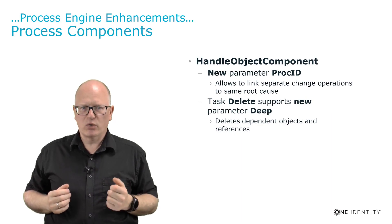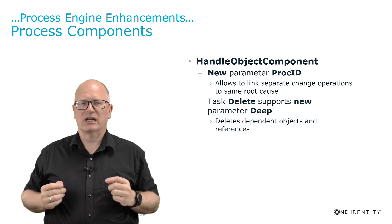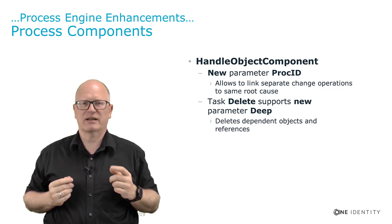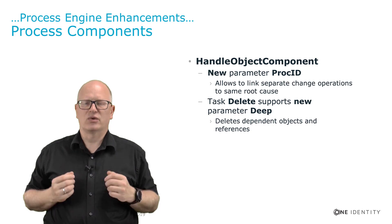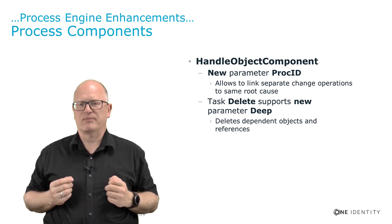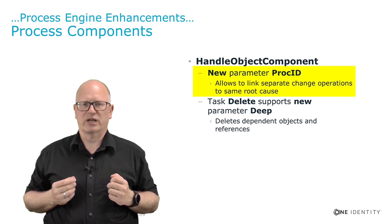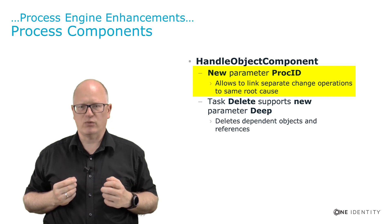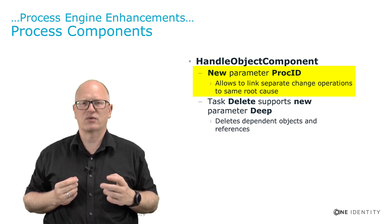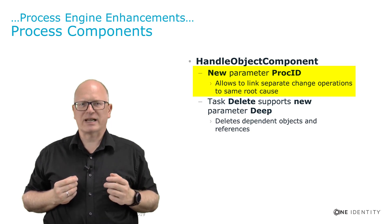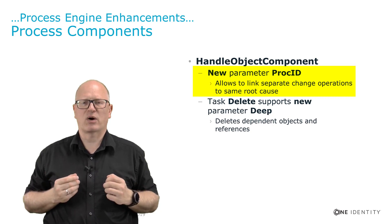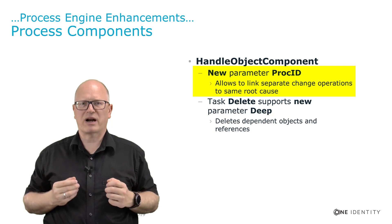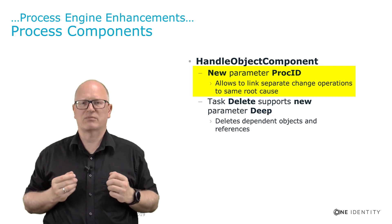The HandleObject component was also upgraded. The HandleObject component is there to let the database know that some data has to be changed using the process engine of Identity Manager, to include the complete functionality of the API. The first change is a new parameter, PROC ID, which automatically bypasses through the PROC ID. This was possible in the past, but required using an optional parameter configured with the name PROC ID. This is no longer necessary — there is now a standard PROC ID parameter, and you just need to ensure the PROC ID gets passed through.